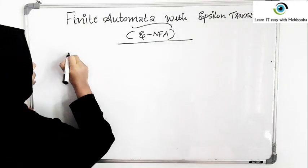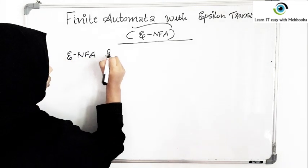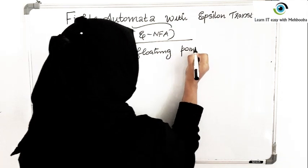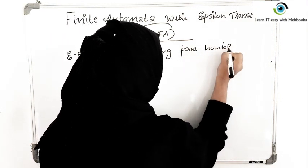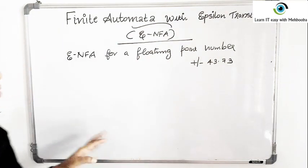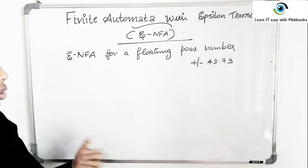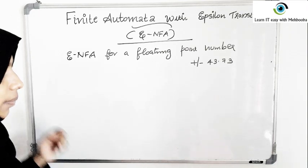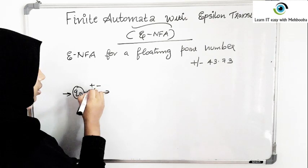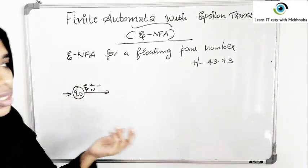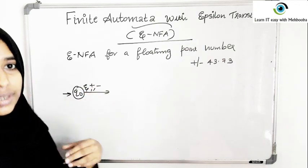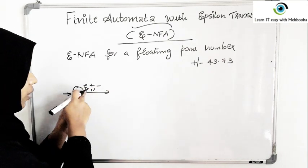We will draw an epsilon NFA for a floating point number. We are accepting numbers like plus or minus 43.73. Initially it can be plus or minus. Even if there is no plus or minus at the beginning, we can assume it is a positive number. So from Q0, you can have a plus or a minus — and even if you don't have plus or minus, epsilon takes you to the next state, since positive numbers don't usually carry the plus sign.